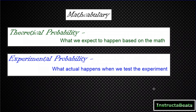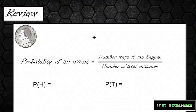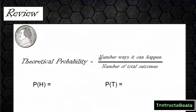Let's take a closer look at the differences between the two. The probability of an event is the number of ways that event can happen over the number of total outcomes — we're actually making a ratio here. Really what we've been doing is talking about theoretical probability, which is the number of ways it can happen over the number of total outcomes.